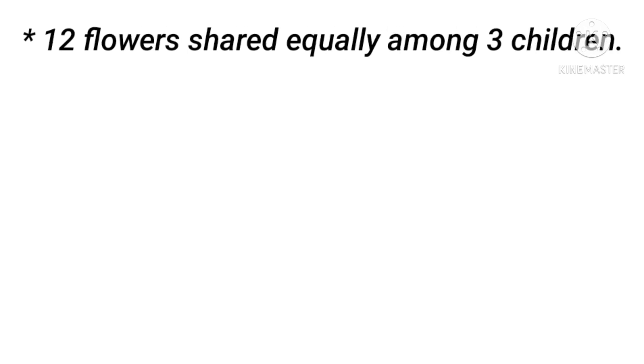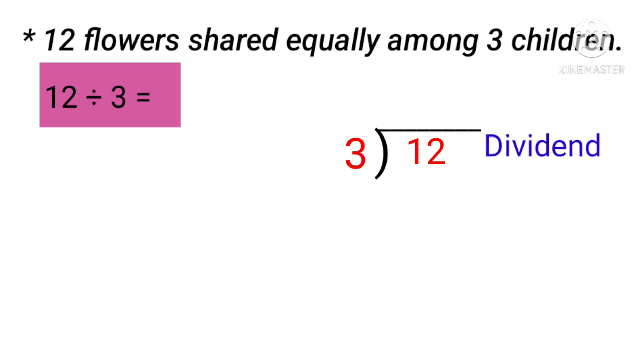Let's start with this example: 12 flowers shared equally among 3 children. So 12 divided by 3. In this example, we will write 12 here and 3 here. So children, in this example, 12 is a dividend and 3 is a divisor.